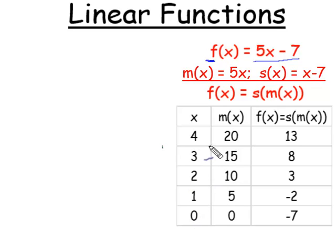We have 4, which multiplied by 5 gives us 20, and then subtracting 7 gives us 13. Similarly, 3 gives us 15, and then 15 gives us 8. 2 gives us 10, and 10 gives us 3. 1 gives us 5, and 5 gives us negative 2. And 0 gives us 0, and subtracting 7 we get negative 7.